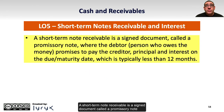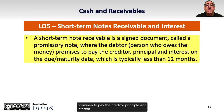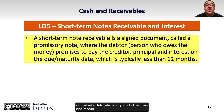A short-term note receivable is a signed document called a promissory note, where the debtor — the person who owes the money — promises to pay the creditor principal and interest on the due or maturity date, which is typically less than one year.